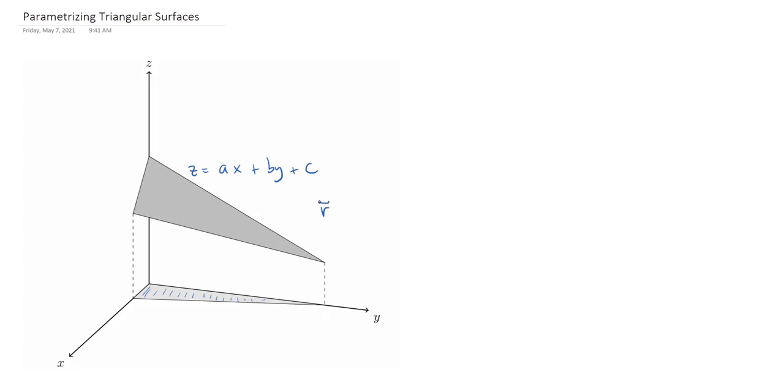You can set up something of the form r(u,v) equals, and then you just use u and v as your x and y coordinates, and then you'll have au plus bv plus c. And now the issue is where do the u and v lie, and they should lie in D where D is this shadow in the xy plane.